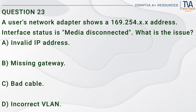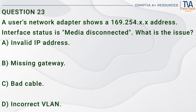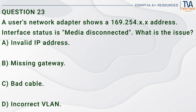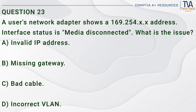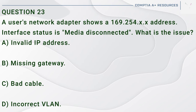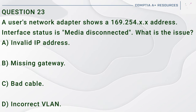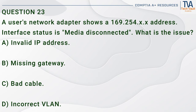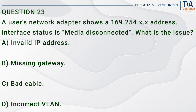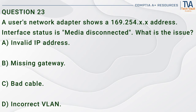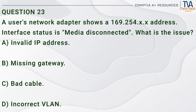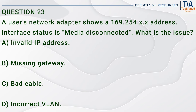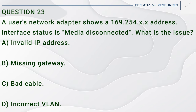Question 23. A user's network adapter shows a 169.254.x.x address. Interface status is media disconnected. What is the issue? A. Invalid IP address. B. Missing gateway. C. Bad cable. D. Incorrect VLAN.